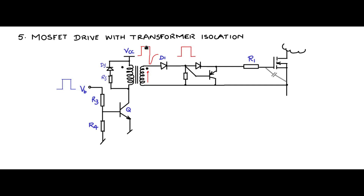During the time when the secondary is positive, current flows through the second diode we added — which has a forward drop of 0.6V — then through R1 to charge up the CGS capacitance. A charge QGS is deposited in the MOSFET and the MOSFET turns on. During this turn-on period, the diode is forward biased in this fashion, but looking at the PNP transistor — the emitter is negative and the base is positive — so this PNP transistor is off and is out of the picture.